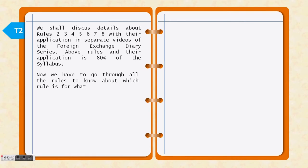So there are a total of 8 rules, and we have only discussed the first rule in detail so far. The remaining rules are covered in the FEDI foreign exchange rulebook. We have discussed the first rule deeply. The second rule is about export transactions.